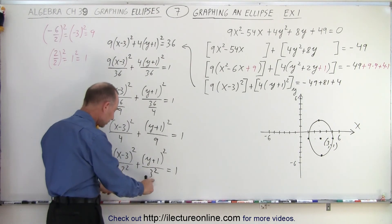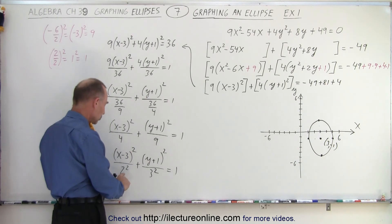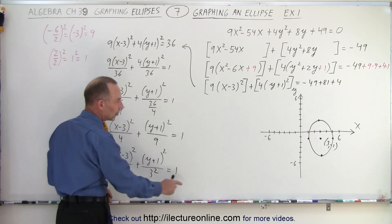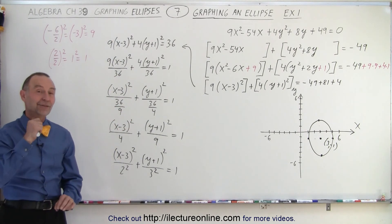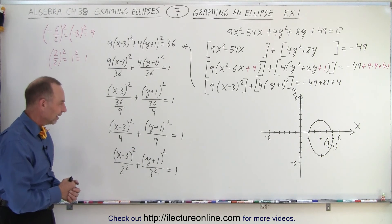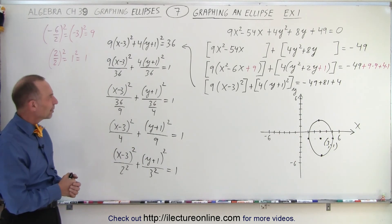This is 3 squared, and then you move to the right and left two units, up and down three units, to find the other four points on the ellipse. Connect the dots and you have yourself an ellipse.